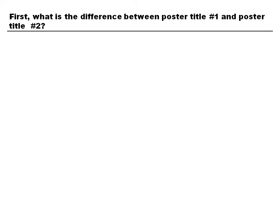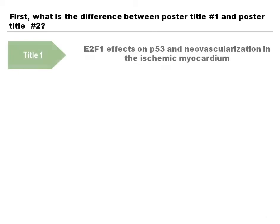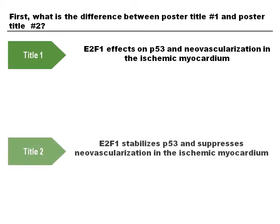Let's look at the difference between two poster titles. Poster title number one reads: 'E2F1 effects on P53 and neovascularization in the ischemic myocardium.' Poster title number two reads: 'E2F1 stabilizes P53 and suppresses neovascularization in the ischemic myocardium.' So what's the difference?